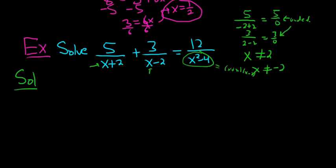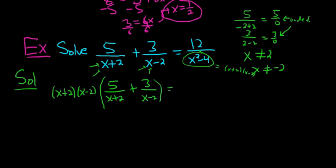So if we multiply by (x+2) and (x-2), we can clear all of the fractions. So we have (x+2)(x-2) times [5/(x+2) + 3/(x-2)], and that's equal to 12.